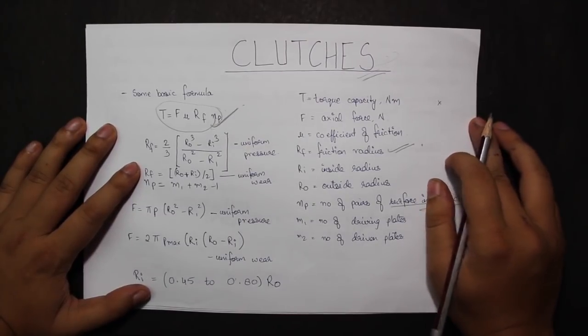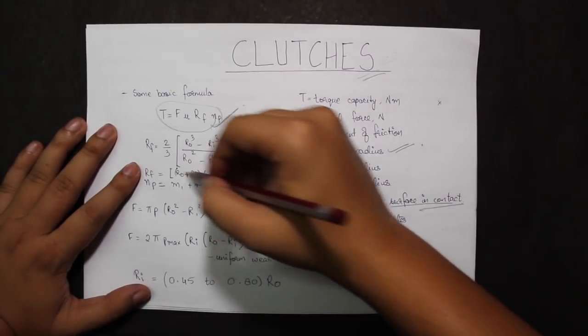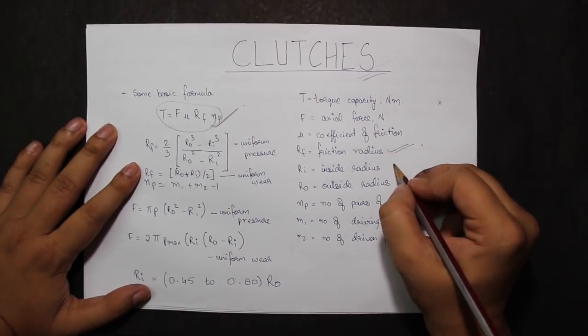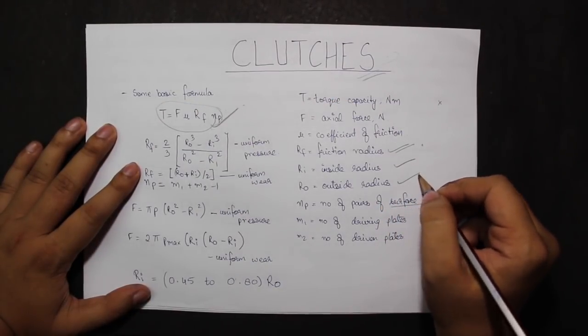Now RF is given by this formula where R0 is the outside radius and RI is the inside radius for uniform pressure.